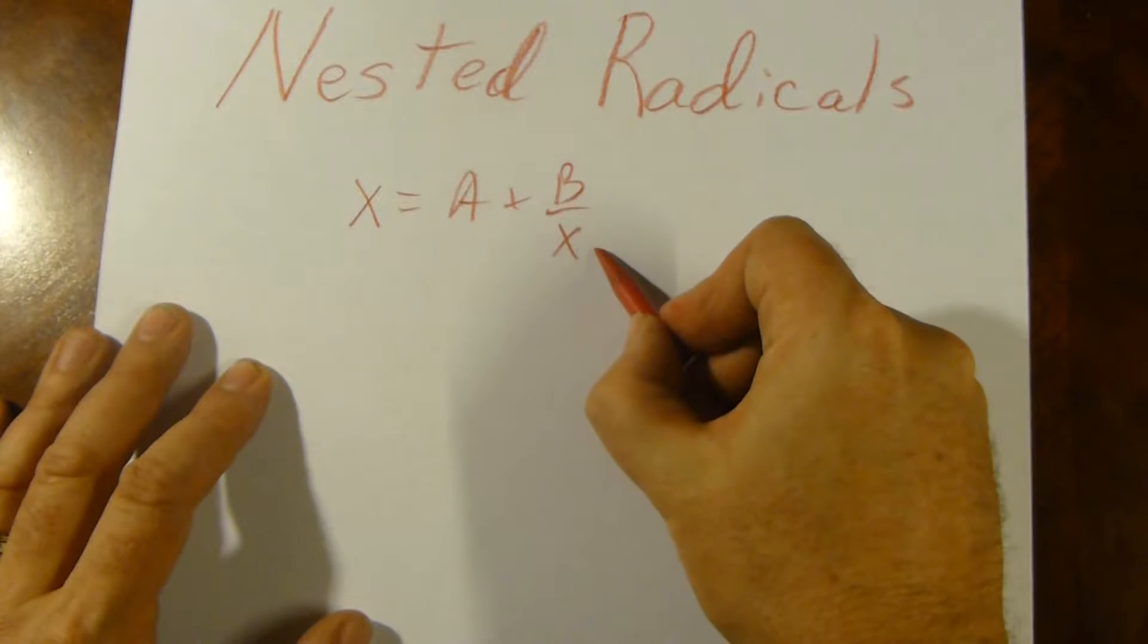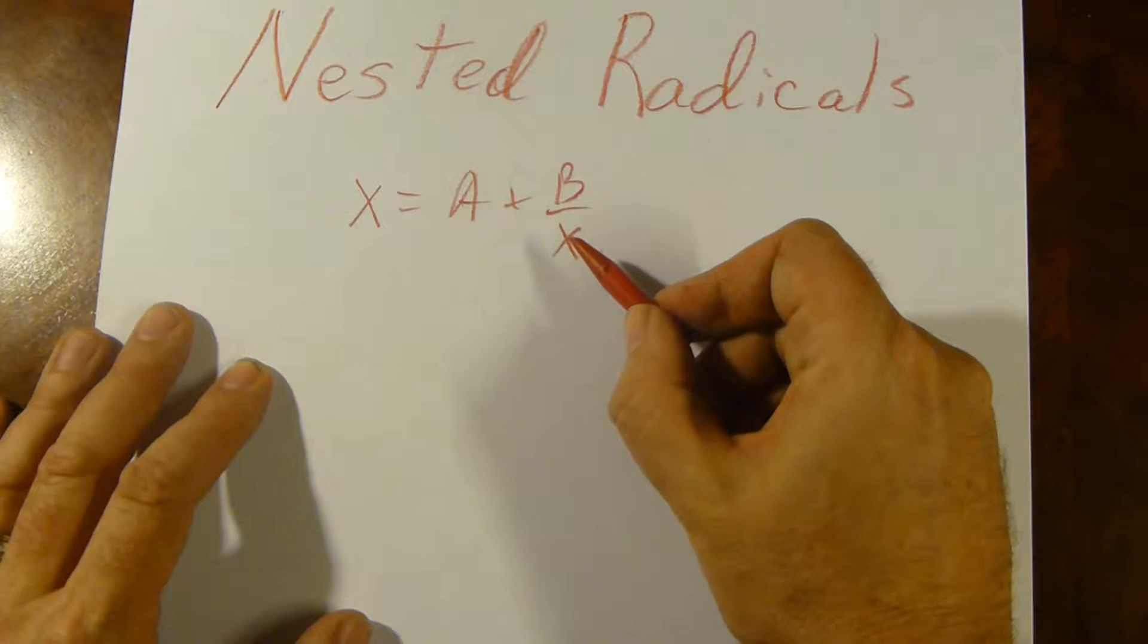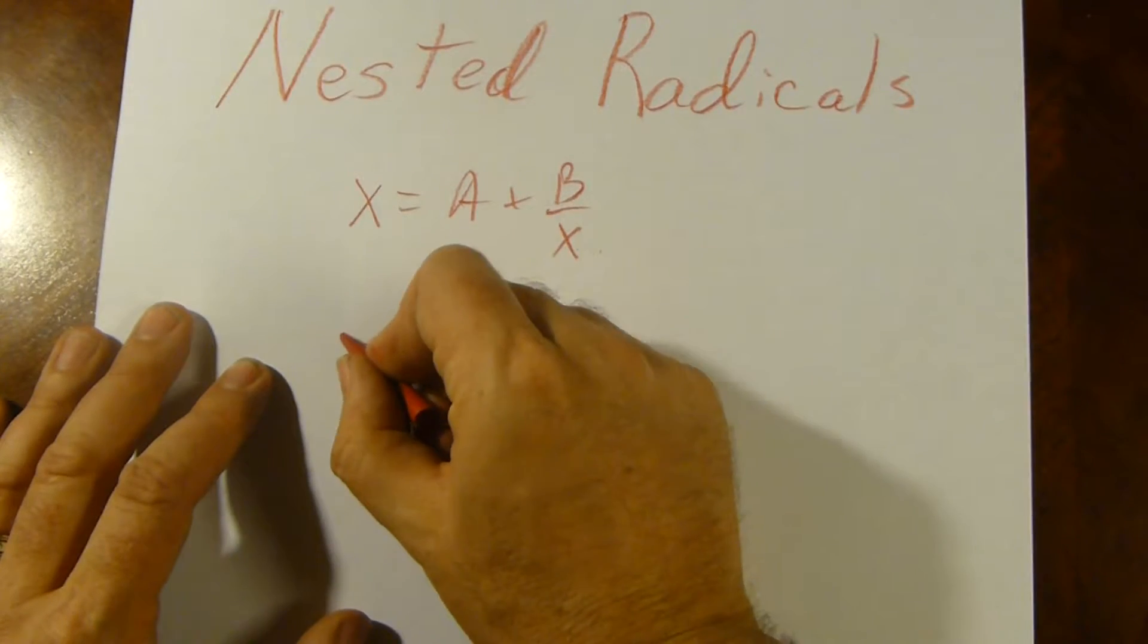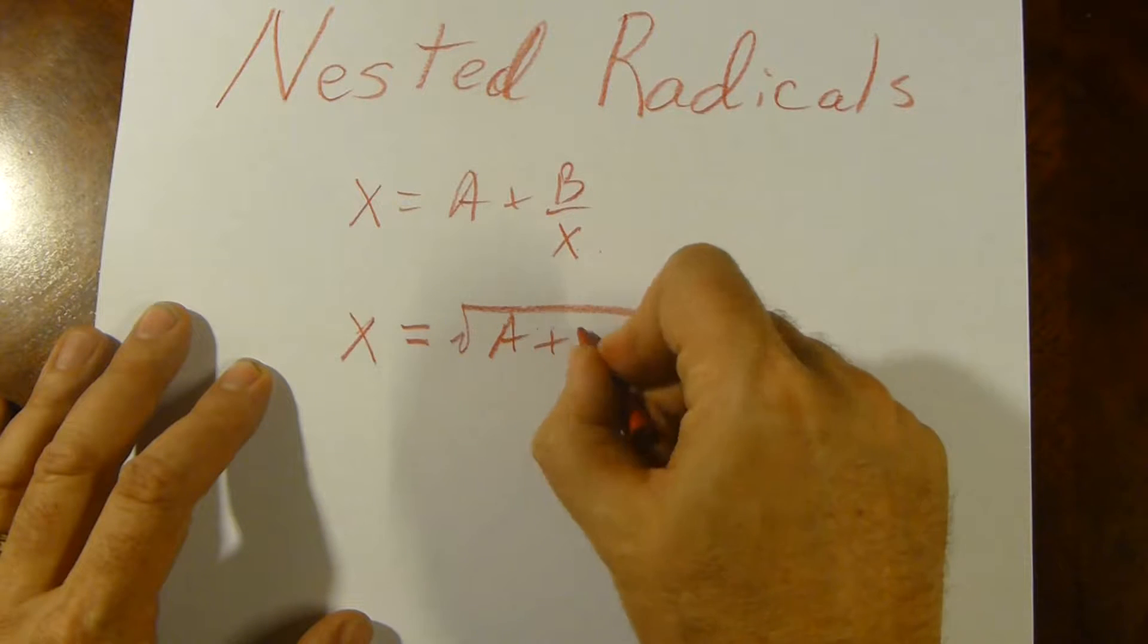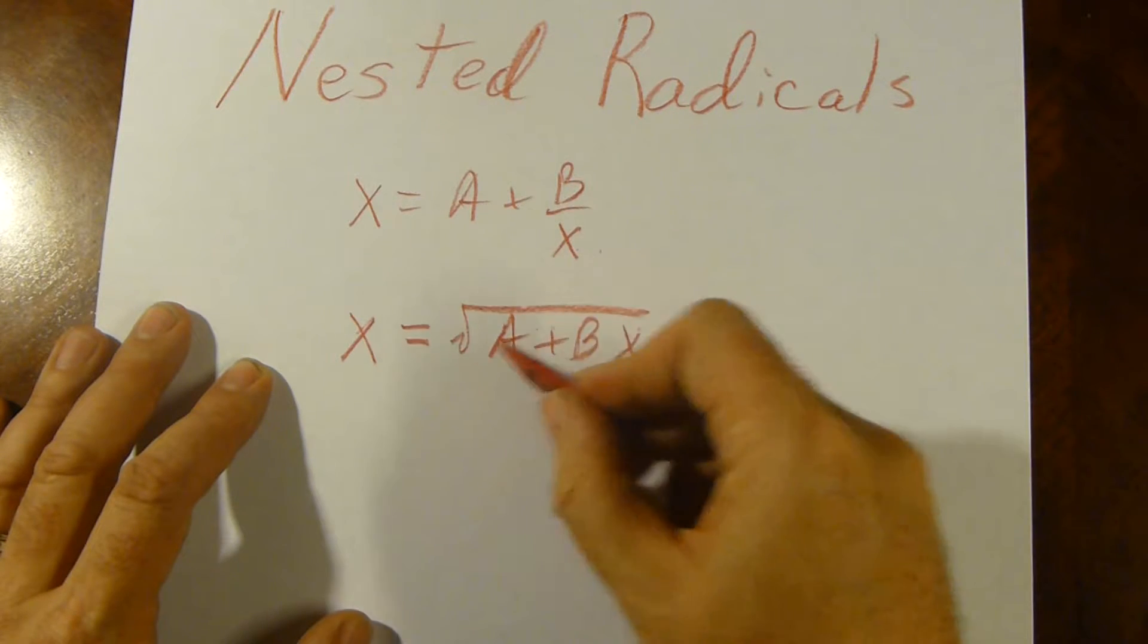If we just replace x down here, we end up with a continued fraction. Instead, today, we're going to take a look at equations of the form square root of a plus bx.